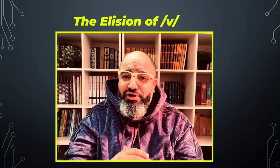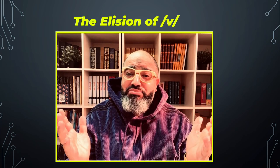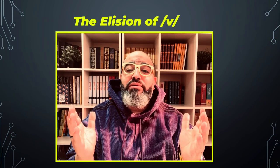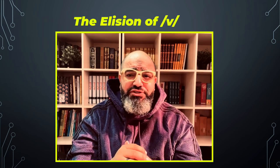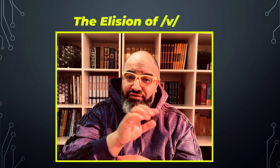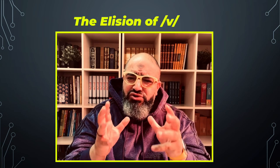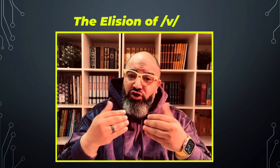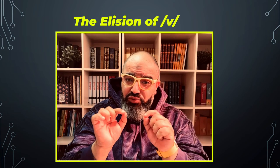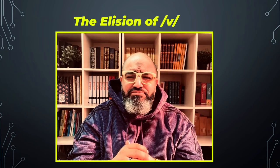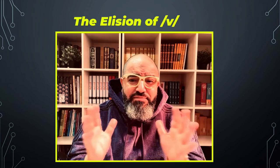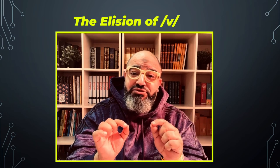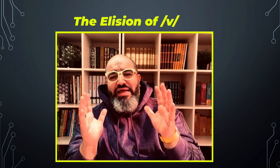Welcome, my friends, to a new episode of Connect Your Speech. In today's episode, we're going to talk about another feature of connected speech. We will talk about elision, and to be more specific, we will talk about the elision of the V sound. Now, for those who do not remember what elision is: elision is the omission of one or more sounds in a word or phrase. But why does it happen? Simply because we want our pronunciation to be faster and smoother.